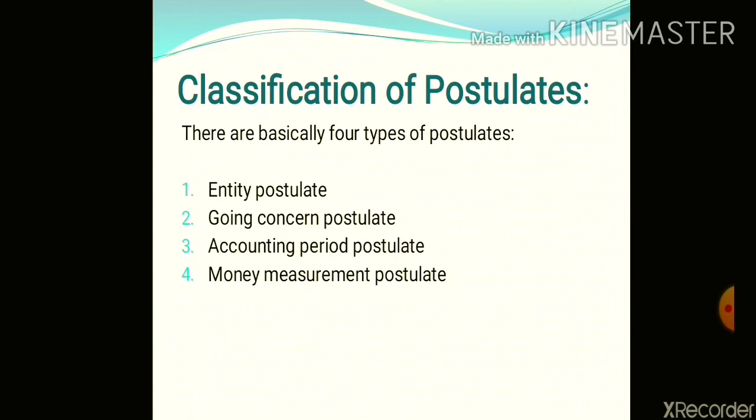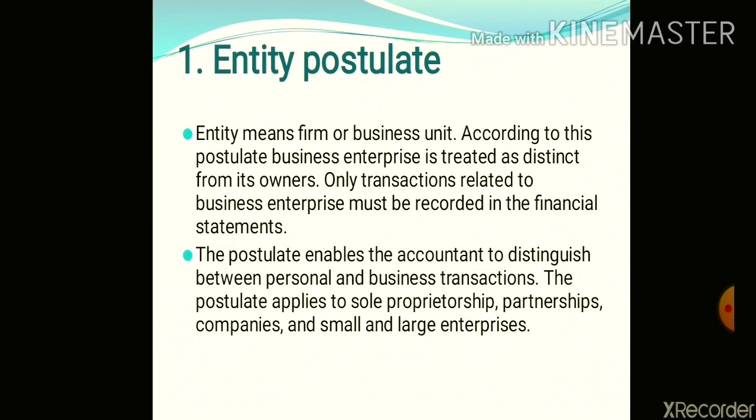Accounting postulates have four main classifications: Entity Postulate, Going Concern Postulate, Accounting Period Postulate, and Money Measurement Postulate.